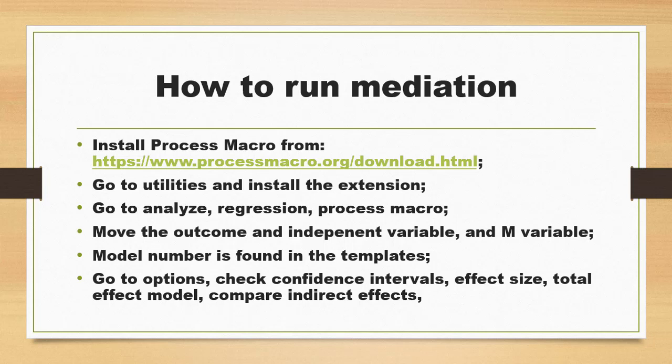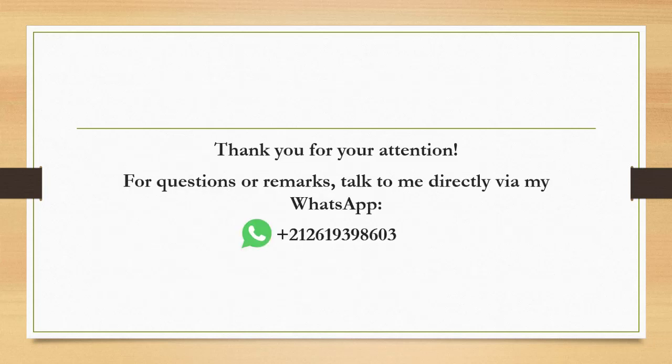Once you have done that, go to Options and check: confidence intervals, effect size, total effects model, and compare indirect effects, then click OK. You will then have the output with the analysis. To interpret mediation, find the p-value and the coefficient of the relationship to see whether the mediation is statistically significant or not.